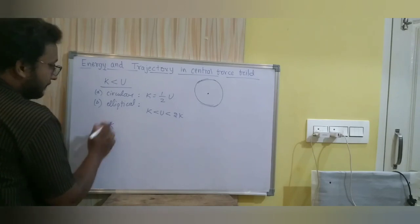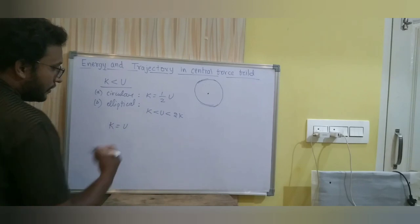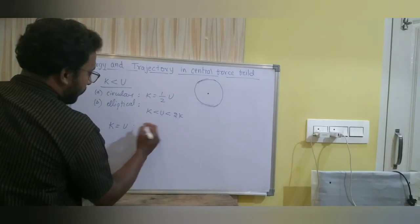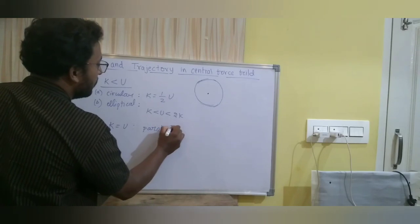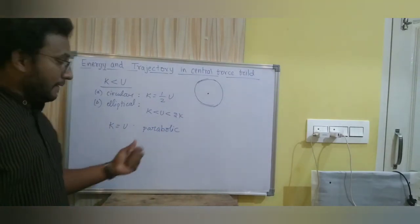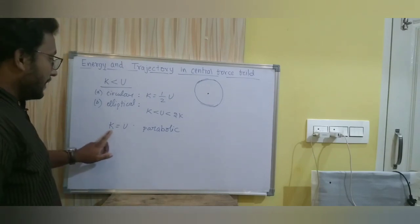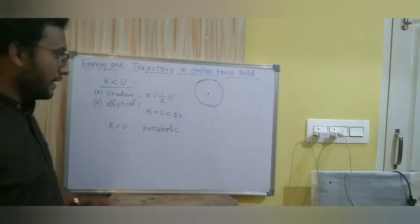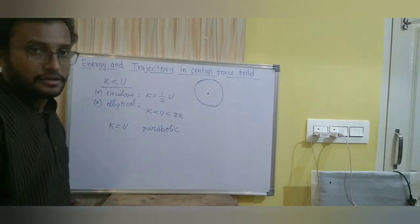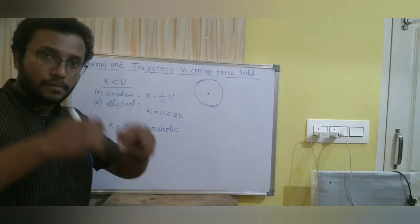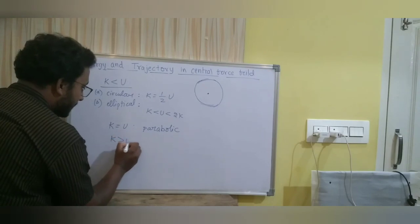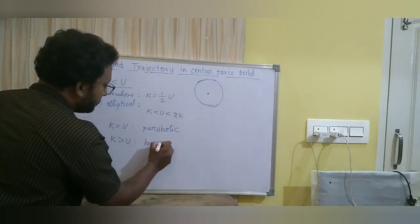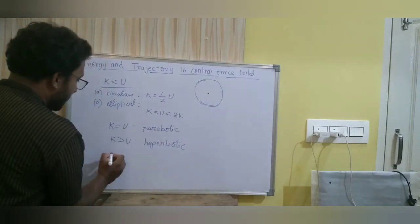If kinetic energy is at least equal to the potential energy, the particle will follow a parabolic path. The parabolic path is an open path, not a closed one — when kinetic energy is not less than potential energy, the path starts opening up. Similarly, if kinetic energy is greater than the potential energy, the path of the particle inside the central force field will be a hyperbola — a hyperbolic path.